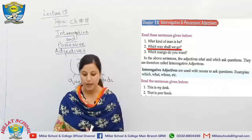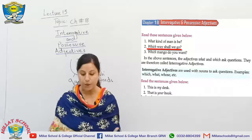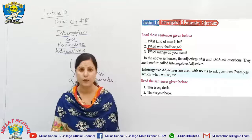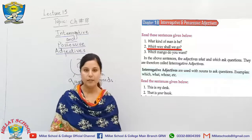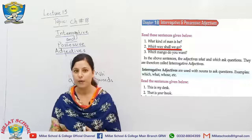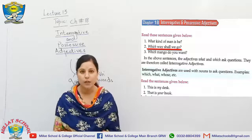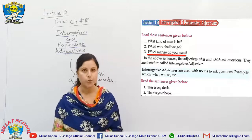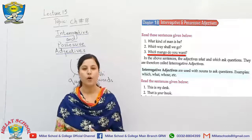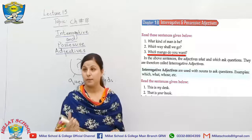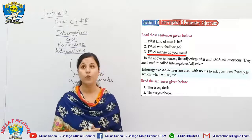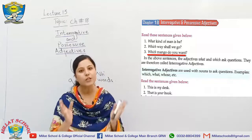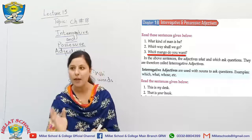More examples on page 61: Number two — 'Which way shall we go?' This tells us about the quality of the way — should we take the short way or the long one? Number three — 'Which mango do you want? Do you want a sweet mango, a big mango, a sour mango? Do you like the yellow one or the orange one?' These are all adjectives describing the mango's qualities.